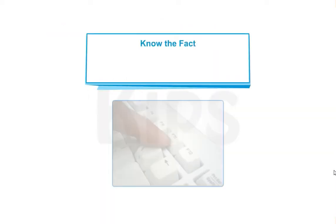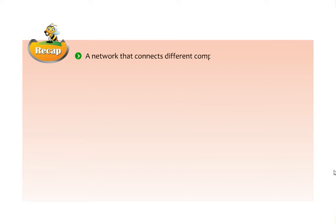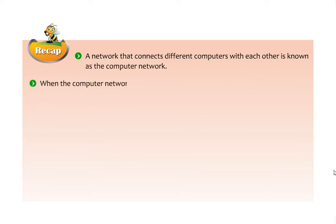Press F11 to enter and exit full-screen mode in Google Chrome. Let us take a recap: a network that connects different computers with each other is known as the computer network. When computer networks are joined together, they form a bigger network called the internet.